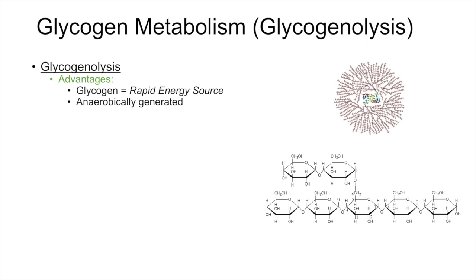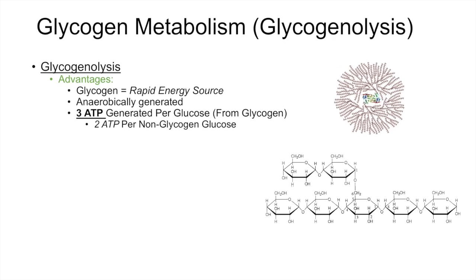Another advantage is that it is anaerobically generated. The energy from a glycogen store can actually be generated anaerobically — we do not need oxygen. And another advantage is that it actually generates 3 ATP per glucose from a glycogen molecule, whereas only 2 ATP are generated from a non-glycogen glucose source, and I'll explain why that is in a moment.